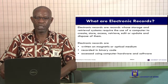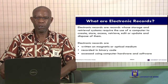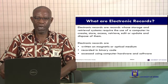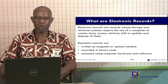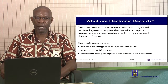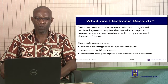That is the medium on which it is captured. Paper manual records are captured on paper, while electronic records are written on magnetic or optical medium. It's recorded in binary code and then it is accessed. In making use of it, you have to use computer hardware and software.